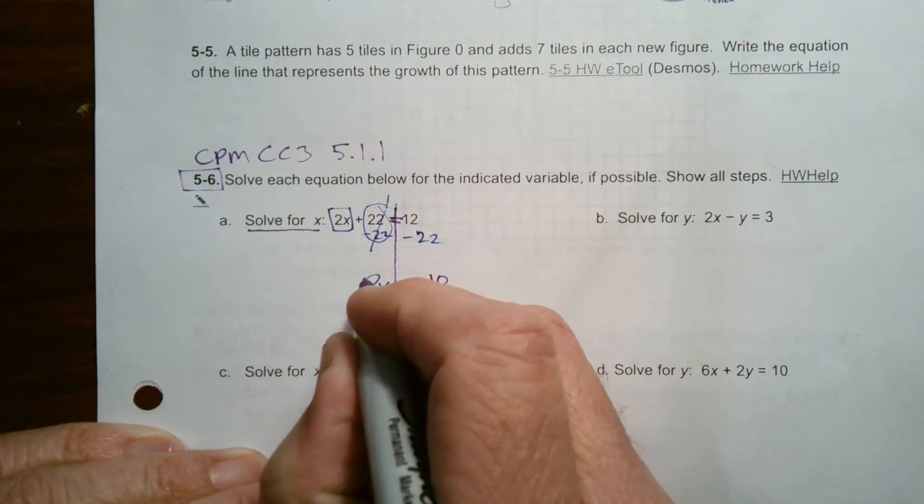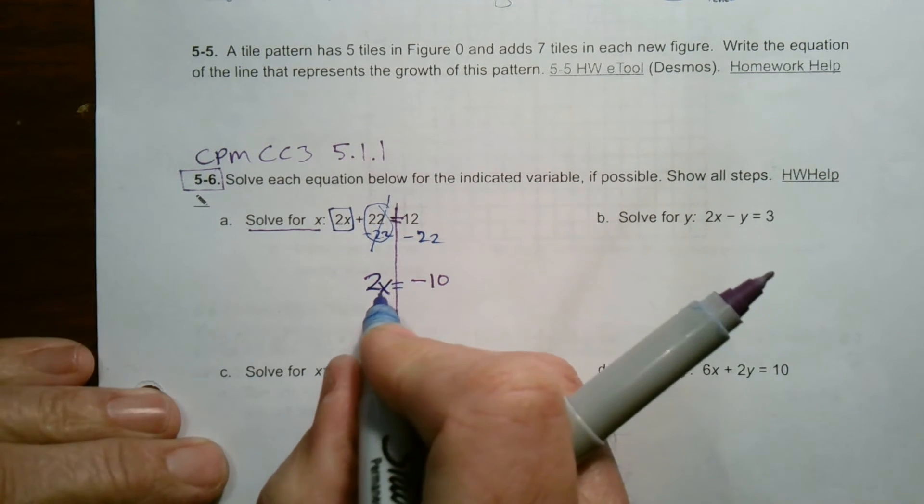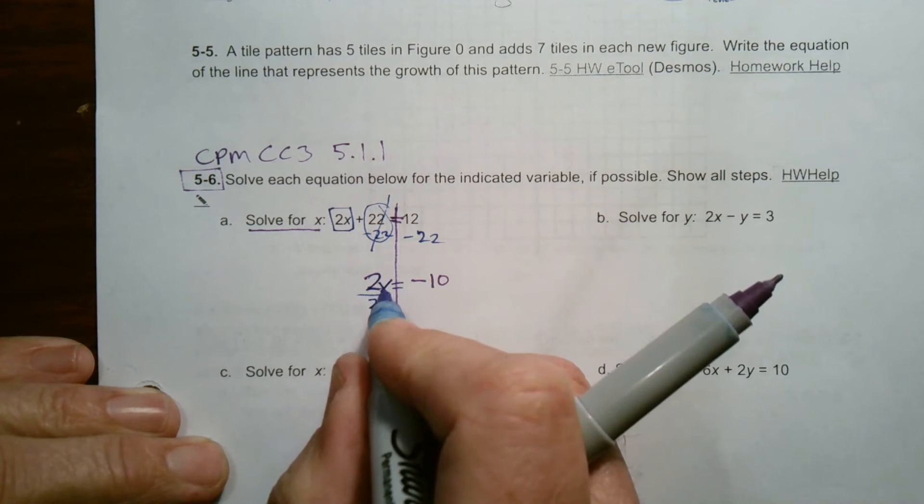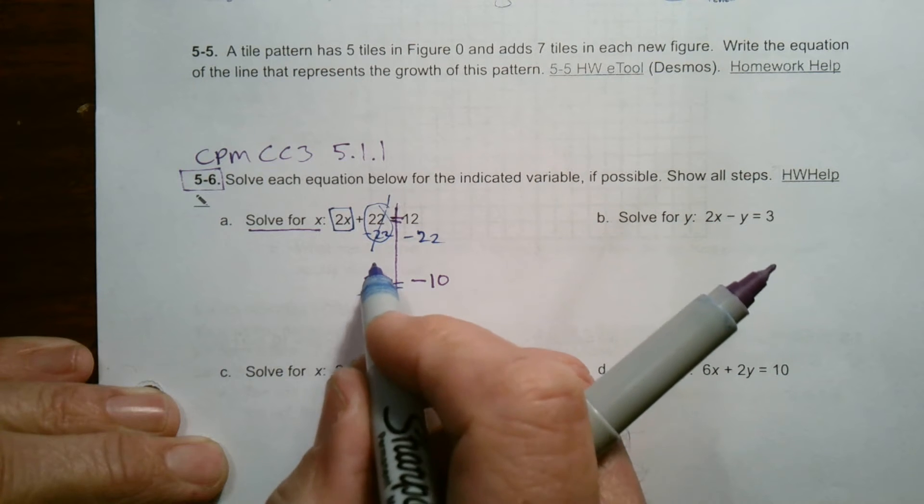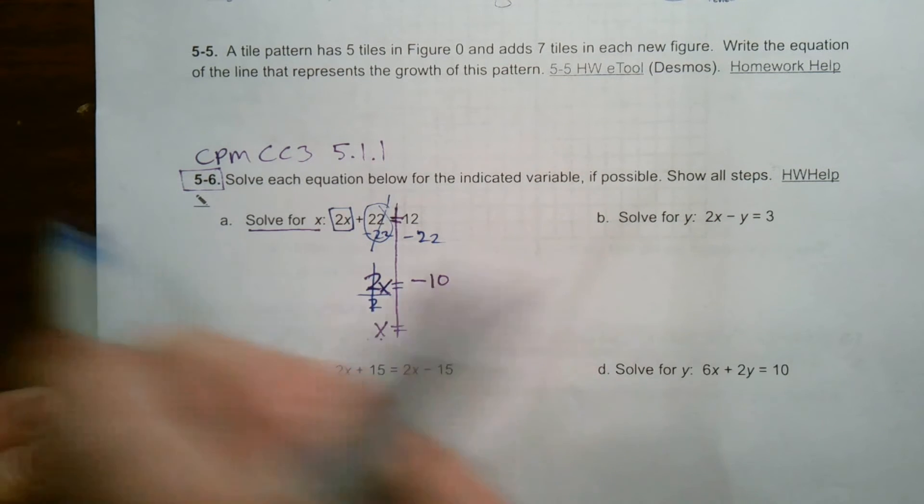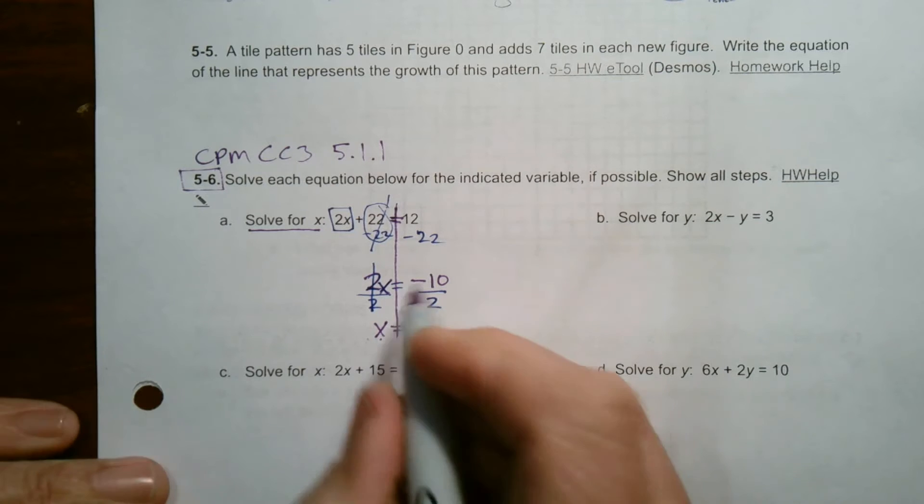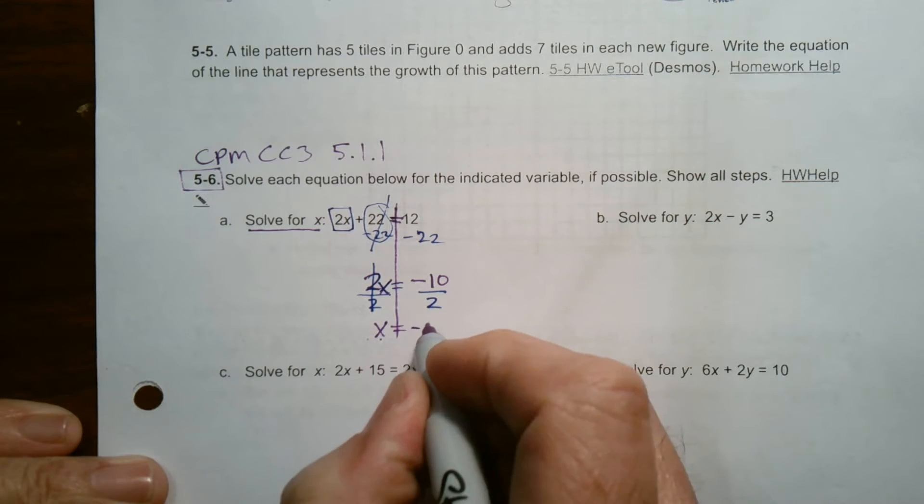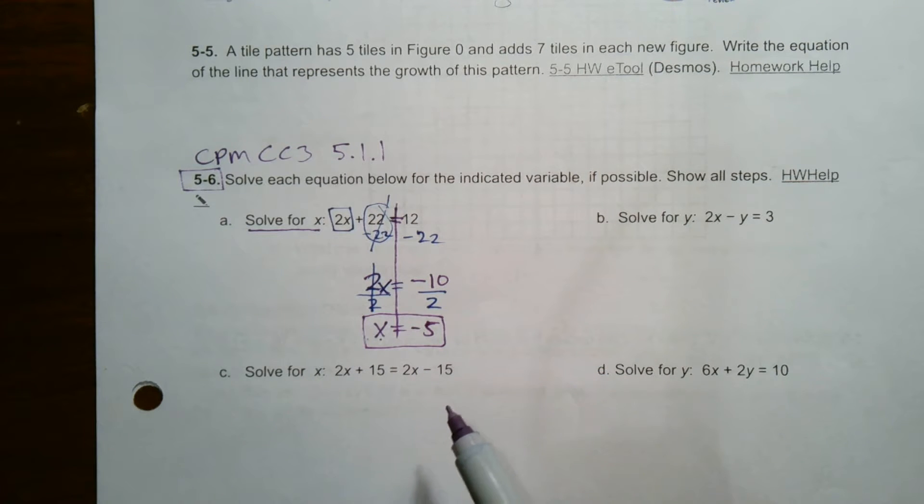So now we have 12 and negative 22 makes negative 10. So I have 2x equals negative 10. And then the last step is always divide by the coefficient so that this x becomes a 1x. That's what we want. So 2 divided by 2 is 1. What you do to one side, you also do the other. So we end up with negative 10 divided by 2 is negative 5. So in this case, I get an answer for x, x equals negative 5.